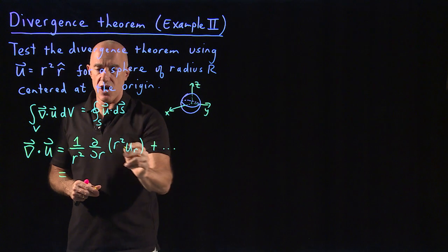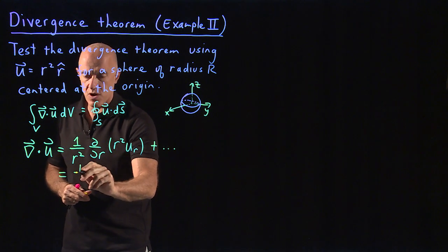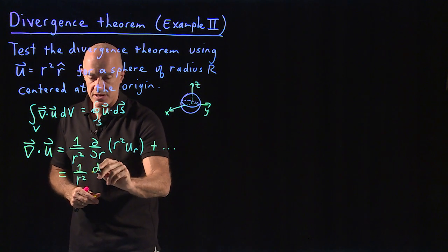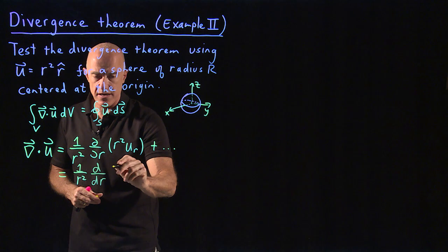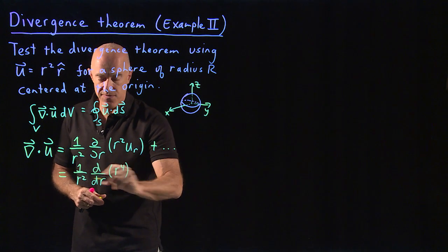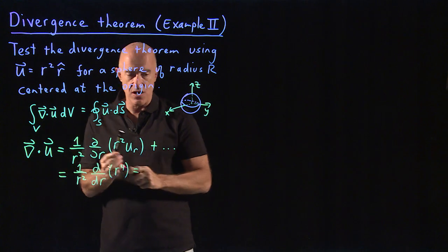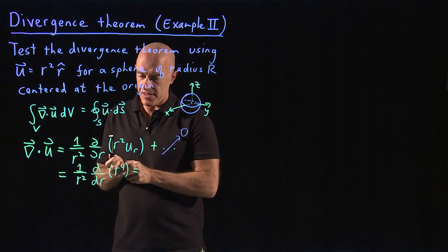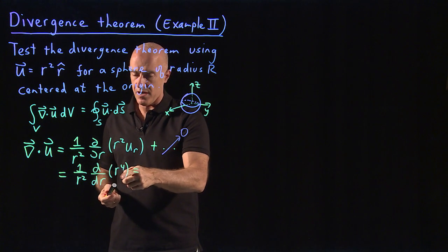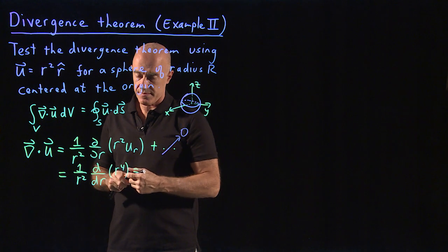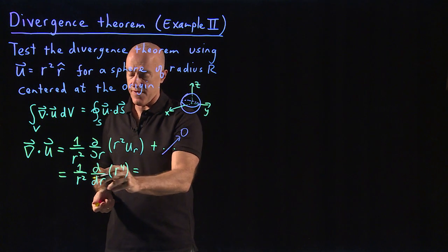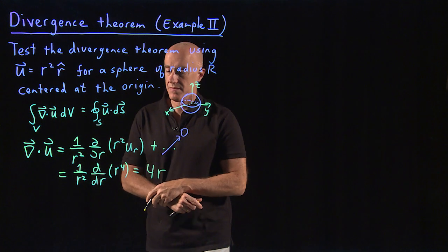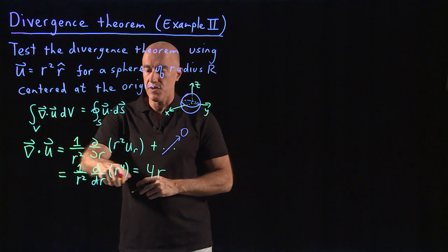So u sub r is r squared. So that's 1 over r squared, and then there's only an r dependence, so I can just write that as d/dr. And this would be r to the fourth. These other terms here are all zero. So we have the derivative of r to the fourth is 4r cubed. So 4r cubed divided by r squared will be just 4r. So del dot u is 4r.